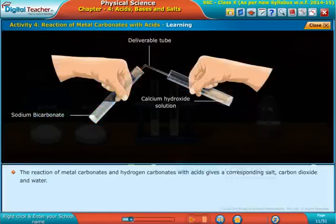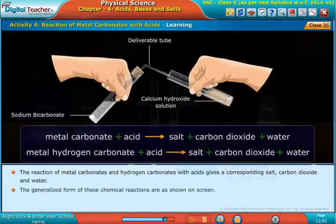The reaction of metal carbonates and hydrogen carbonates with acids gives a corresponding salt, carbon dioxide, and water. The generalized forms of these chemical reactions are shown on screen.